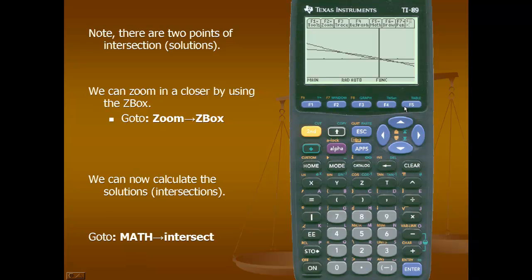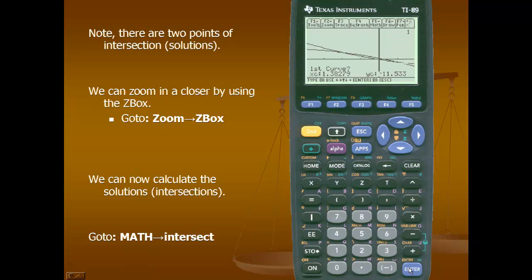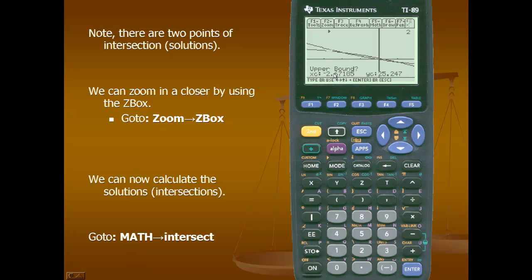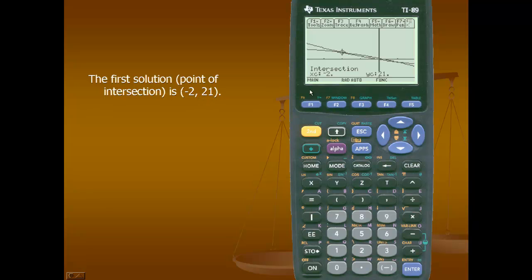Next we'll use the intersection method to calculate the points of intersection. For our first point, I'll hit math, scroll down to number 5 which is intersection, and press enter. I'll move my bullseye toward the left-most intersection point. The calculator recognizes the first curve, so I'll press enter. It recognizes the second curve, so I'll press enter again. It asks for a lower bound, so I'll move to the left of the intersection point and hit enter. For the upper bound, I'll scroll to the right and press enter. The first point of intersection is negative 2 comma 21.